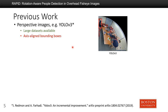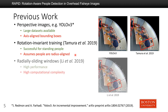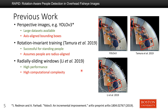To address this issue, several algorithms have been designed for fisheye images. For example, Tamira et al. used rotation-invariant training to produce radius-aligned bounding boxes, which is successful for standing people. However, they have a strong assumption that people are always radius-aligned, which is not true. Alternatively, Li et al. extracts sliding windows from fisheye images and applies YOLO v3 to each window, achieving good performance at the cost of very high computational complexity.